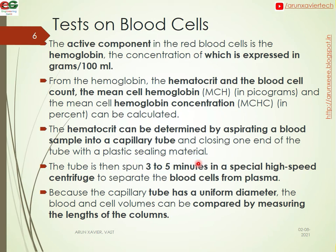The active component in the red blood cell is hemoglobin, the concentration of which is expressed in grams per 100 ml. From the hemoglobin, the hematocrit, and the blood cell count, the mean cell hemoglobin and the mean cell hemoglobin concentration (as a percentage) can be calculated.